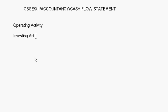There are three activities in a cash flow statement. The first one is the operating activity, the second one is the investing activity, and the third one is the financing activity. Whenever we do a question on cash flow statements, these three activities have to be done separately and the inflows or outflows from these three activities have to be ascertained. First of all, you should know what is an operating activity and what items come under it.